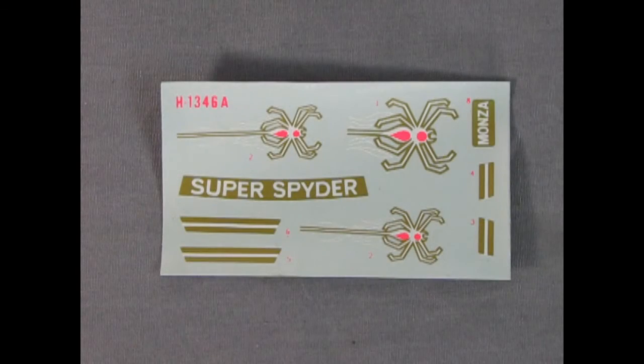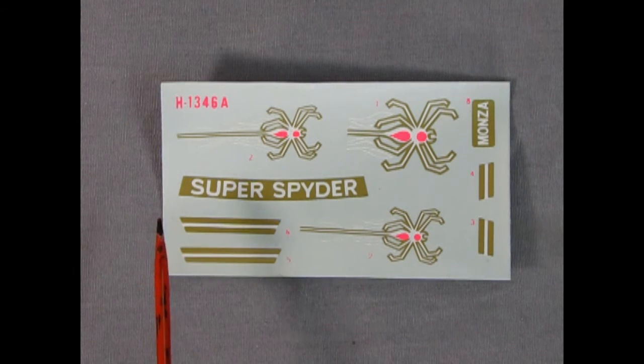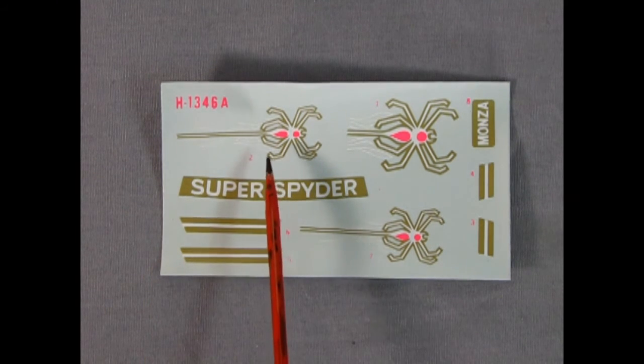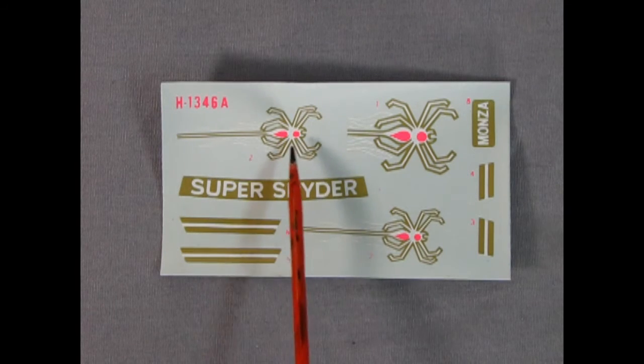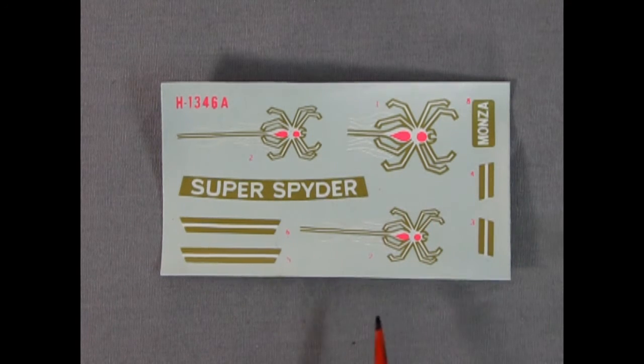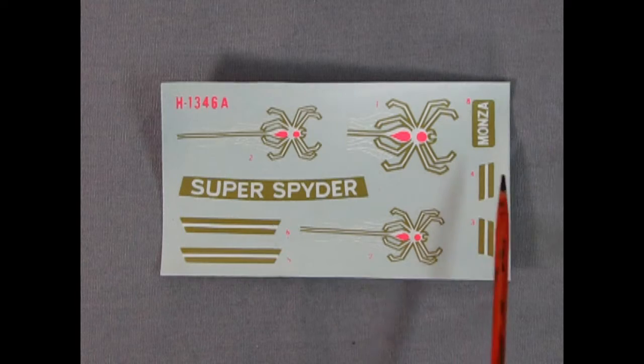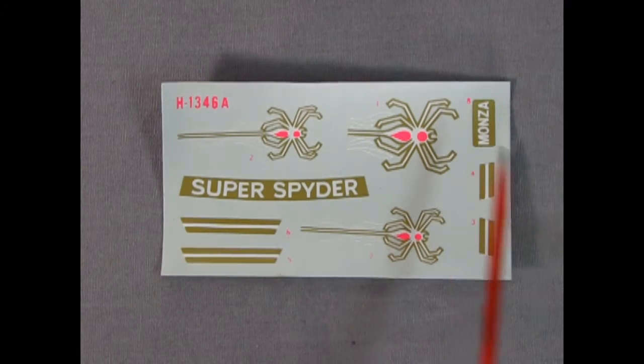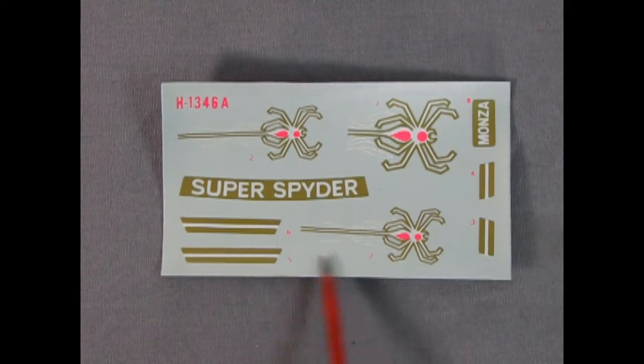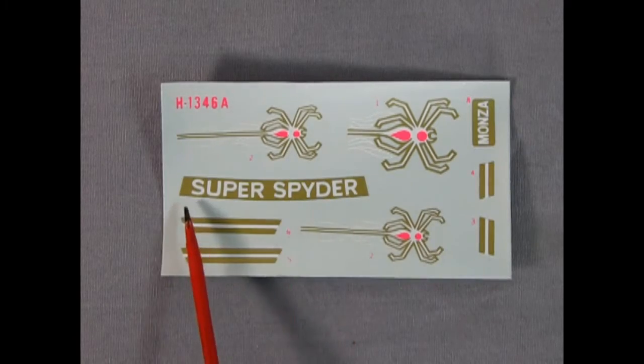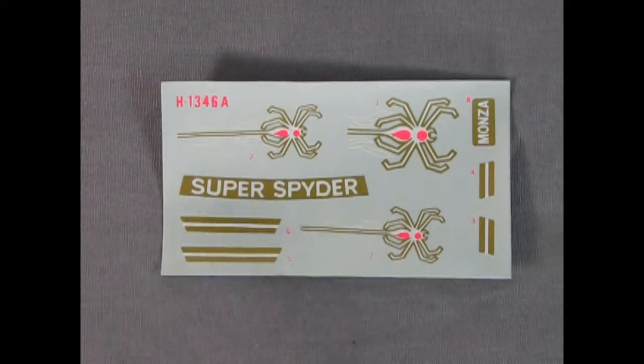Last but not least, we have our decal sheet. And as you can see, these are very simplistic-looking decals, but they do have this really neat neon pink in here. That's really bright, actually. So you've got a Monza. This is your license plate. There's your side stripes, and the spiders, as well as the window sticker. And that completes our look at our 1978 Chevy Monza Super Spider model kit by Revell.